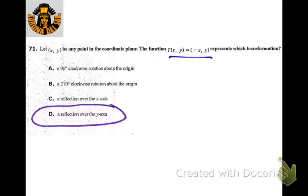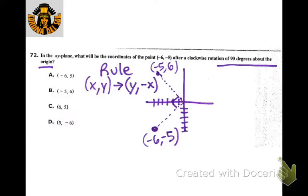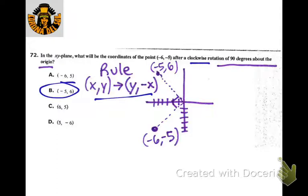For 90 degrees clockwise about the origin, you can memorize that rule or try to draw it out. Starting at negative 6, negative 5 and applying the rule gives negative 5, 6.